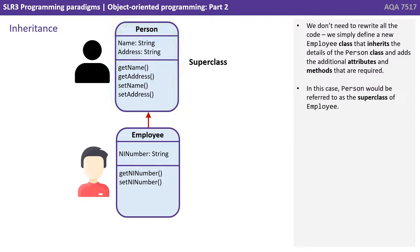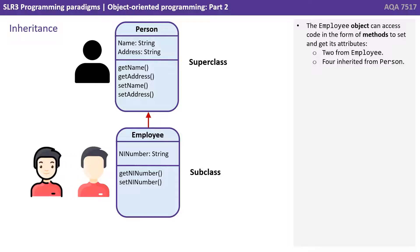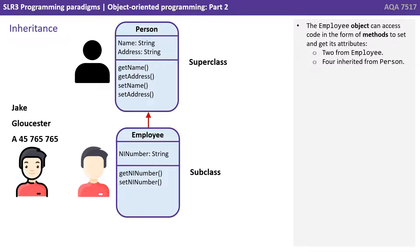In this case, person would be referred to as the superclass of employee. On the other hand, employee would be referred to as the derived class or subclass of person. The employee object can access code in the form of methods to set and get its attributes — two coming from employee and four inherited from person.